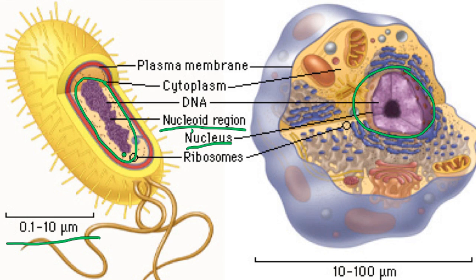Other things to note: both prokaryotes and eukaryotes have ribosomes, but beyond that there's not much that is similar between them. Major differences to remember — prokaryotes have no membrane-bound organelles; eukaryotes have membrane-bound organelles. Prokaryotes are smaller; eukaryotes are bigger. Prokaryotes have no true nucleus — just a wad of DNA — while eukaryotes have a true nucleus. Those are the major divisions between prokaryotes and eukaryotes.